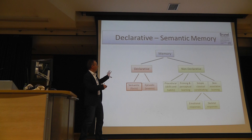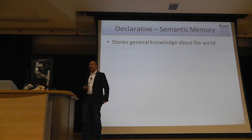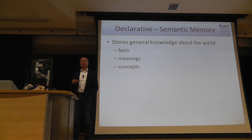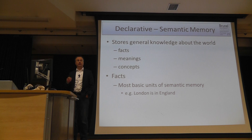Semantic memory is general knowledge about the world: facts, meanings, and concepts. Facts are the most basic units — for example, 'London is in England' or 'London is the capital of the UK.' Memory for such facts can be established immediately — a name heard once from someone you expect to meet again may be remembered without further effort.